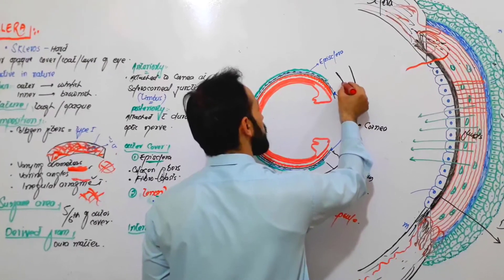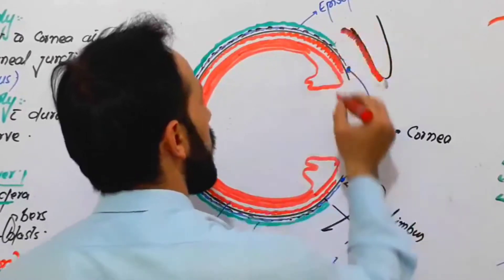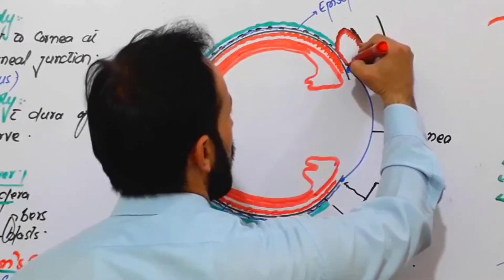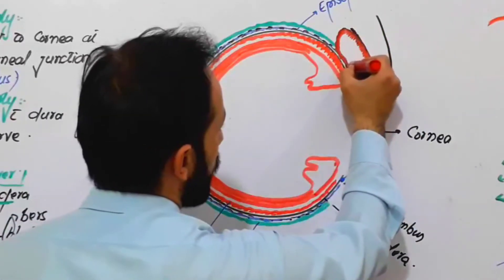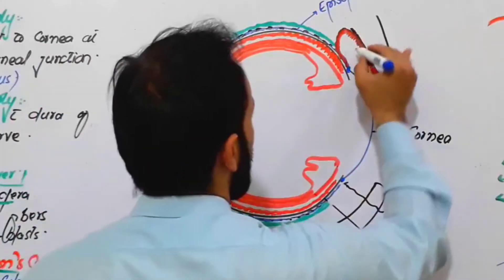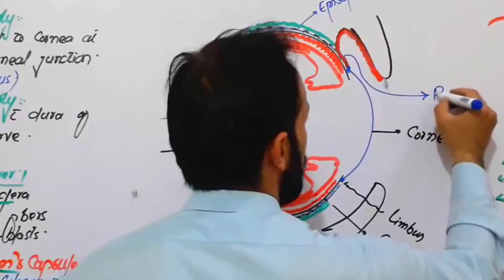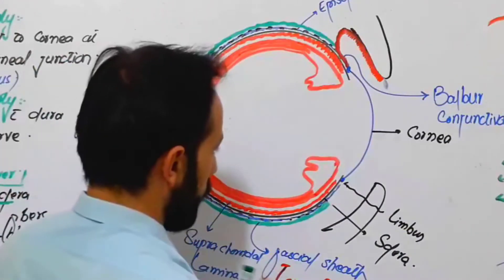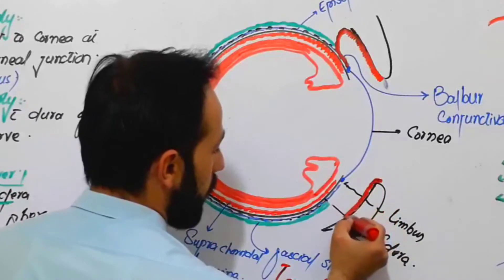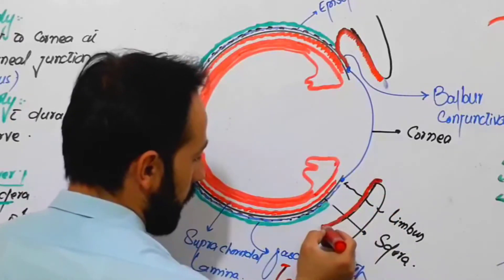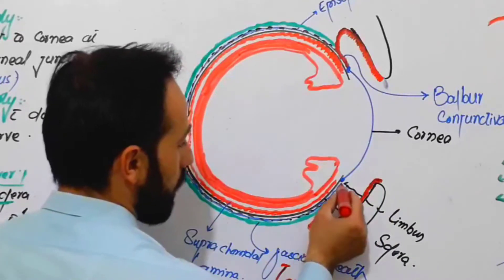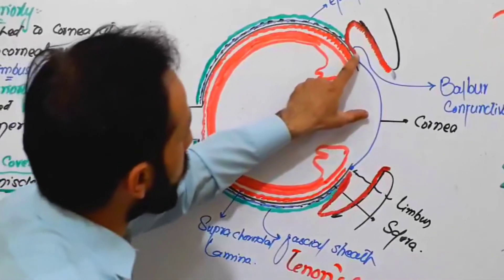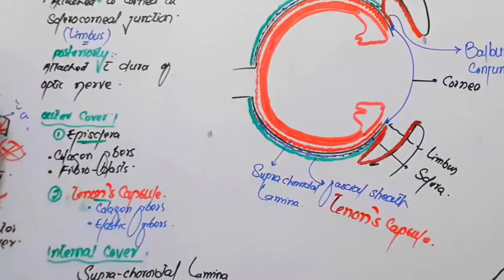There is a very special and very thin layer called the conjunctiva. This is called the palpebral conjunctiva, and this conjunctiva reverses back and on the surface of the sclera it comes up to the corneoscleral junction. It also has an attachment with the bulbar conjunctiva. Behind the eyelid there is palpebral conjunctiva, then the fornix, and then above the surface of the sclera this is called your bulbar conjunctiva.